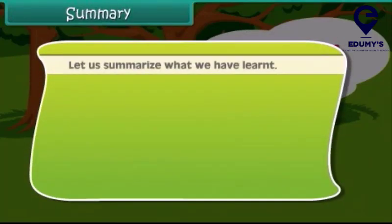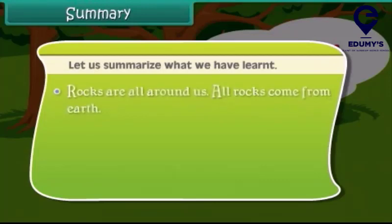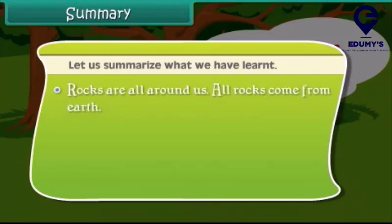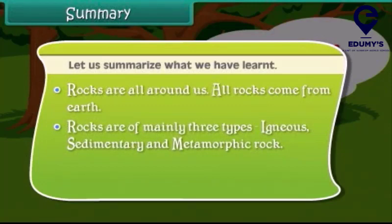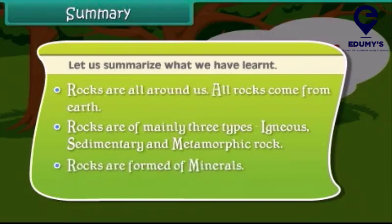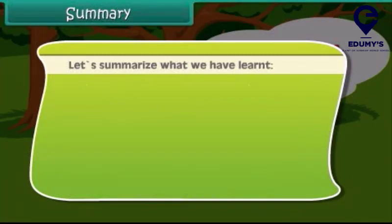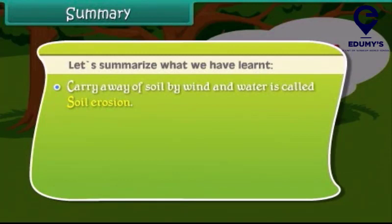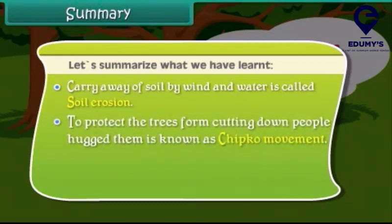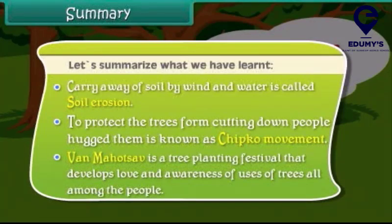Now let us summarize what we have learnt. Rocks are all around us. All rocks come from earth. Rocks are mainly of three types: igneous, sedimentary, and metamorphic. Rocks are formed of minerals. Soil is a thin layer of earth's crust. Carrying away of soil by wind and water is called soil erosion. To protect trees from being cut down, people hugged them and this movement is known as the Chipko Movement. Van Mahotsav is a tree planting festival that develops love and awareness of the uses of trees among the people.